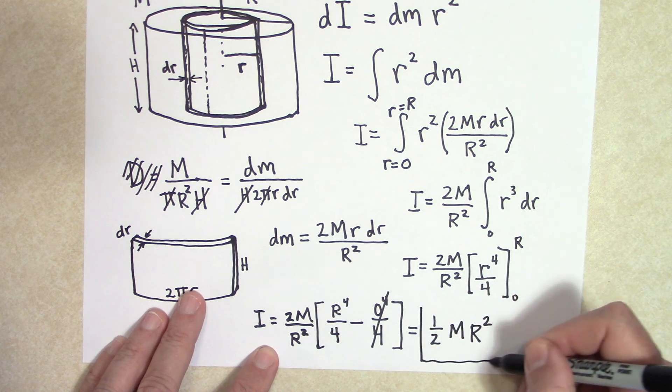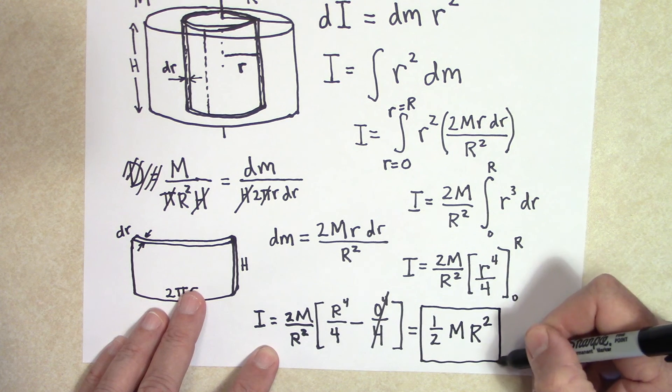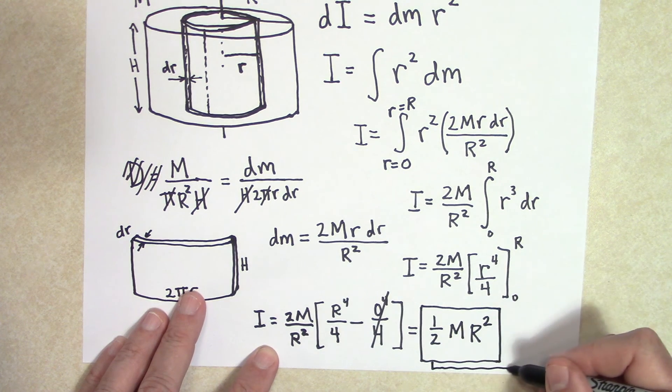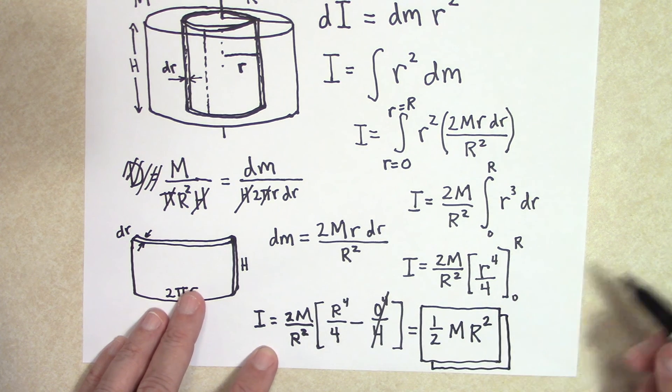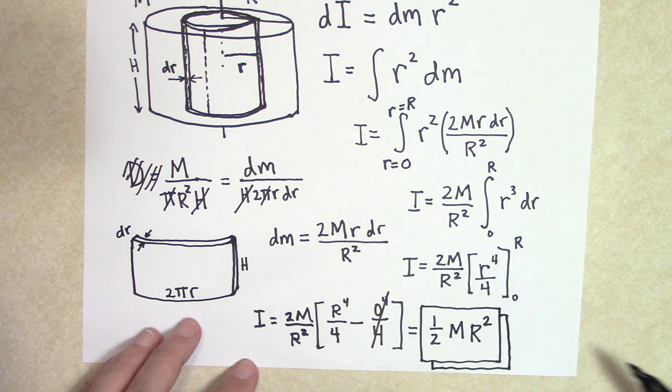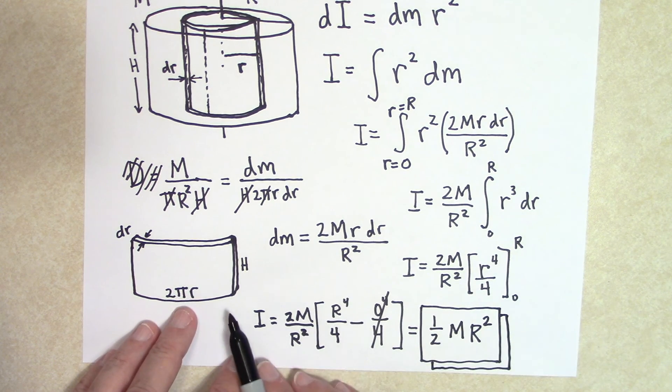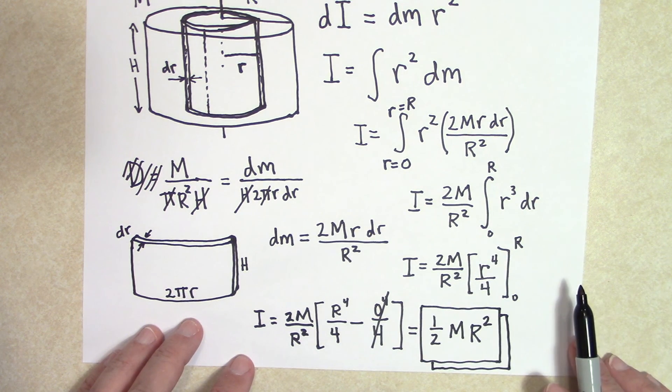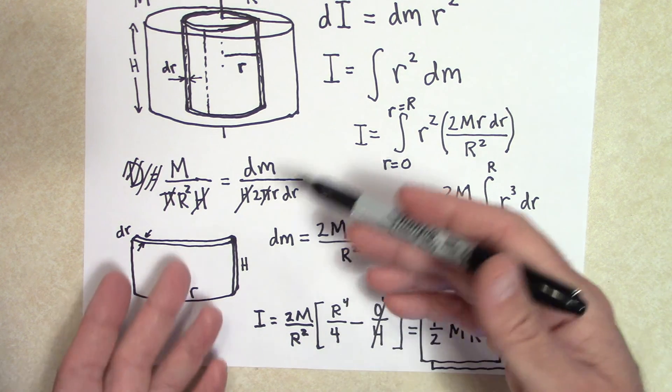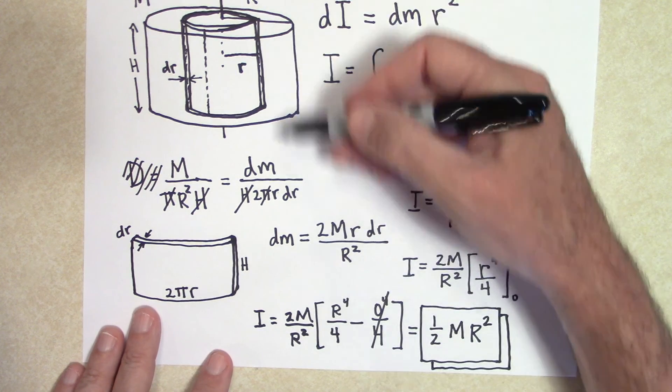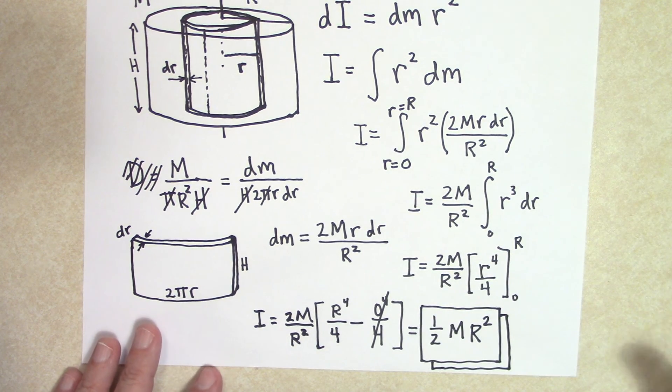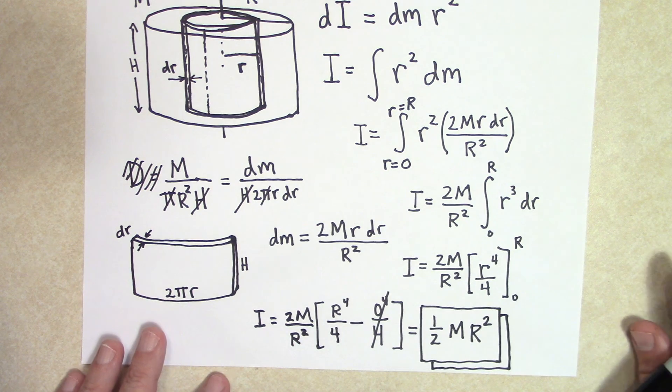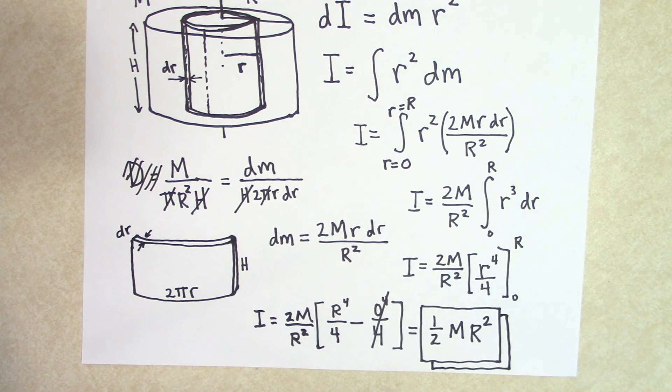So see how the h canceled out. So it doesn't, the fact that this has some dimension now, it's not just a disc, but it's a cylinder. It doesn't matter how tall the cylinder is. It's still going to just be one half times m r squared. All right. Well, thank you.